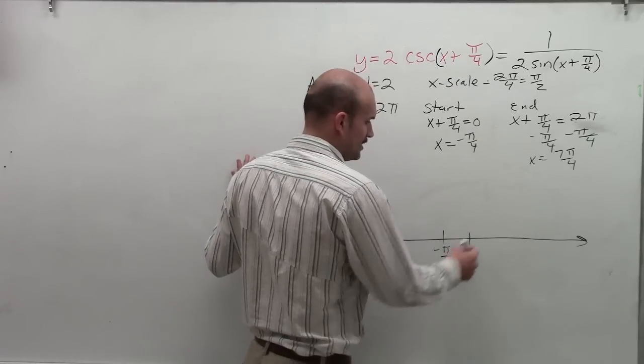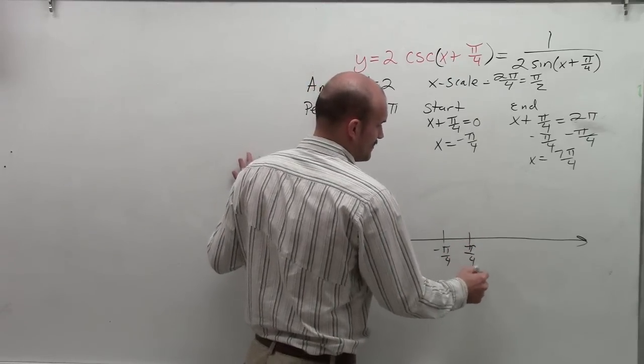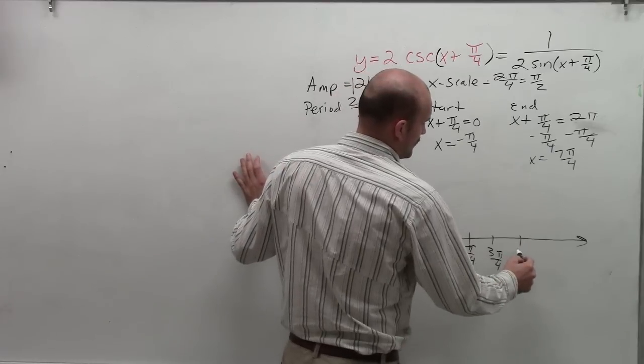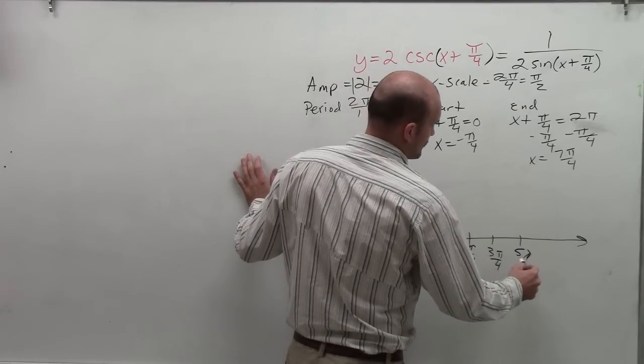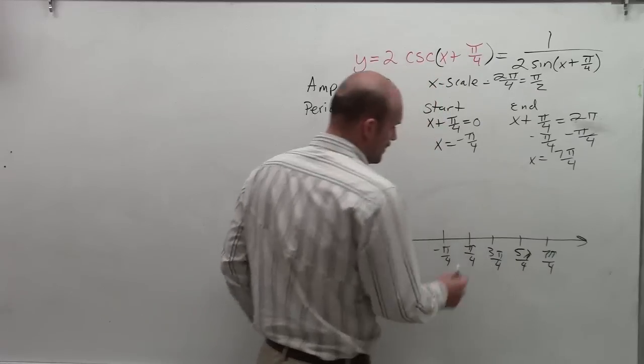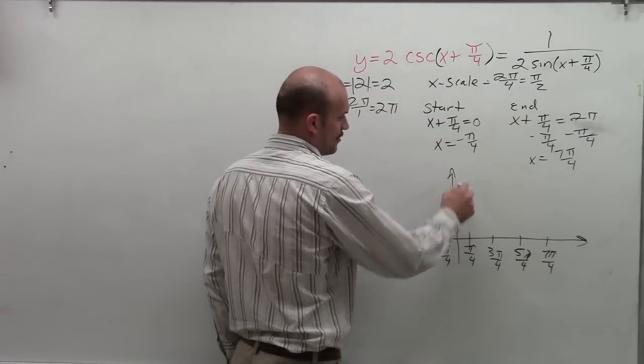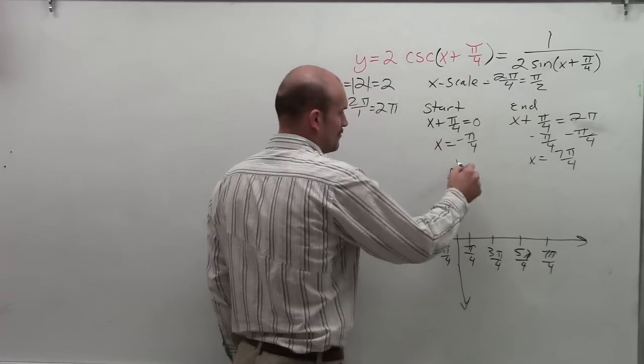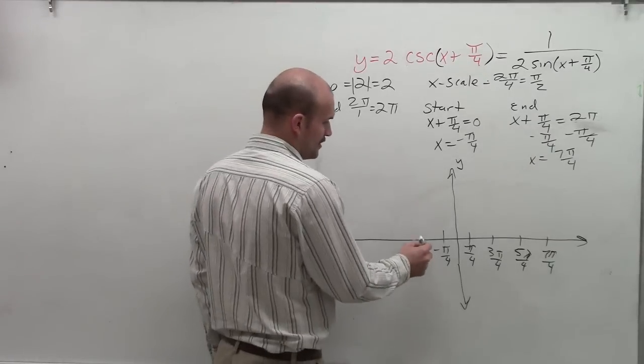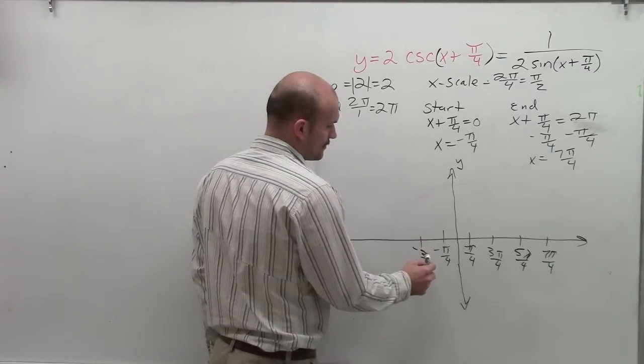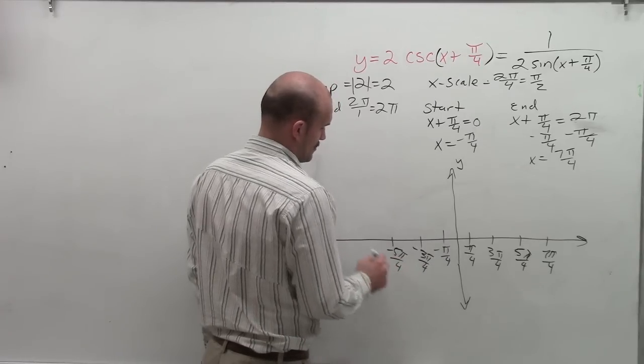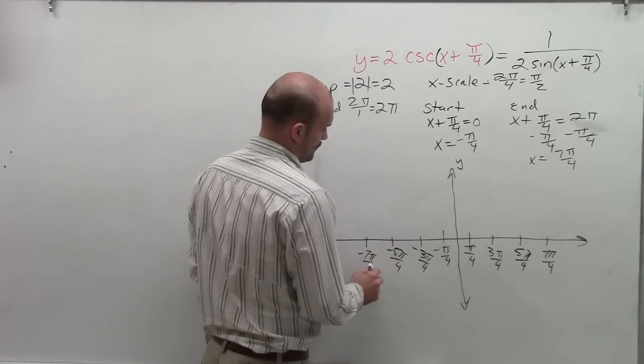So that means my first critical point is going to be pi over 2, which would be pi over 4. Then I'll have 3 pi over 4. Then I'll have 5 pi over 4 and 7 pi over 4. Therefore, you notice that my 0 or my y-axis, or when x equals 0, my y-axis is going to be between negative pi over 4 and pi over 4. Then I'll just continue in the negative direction.